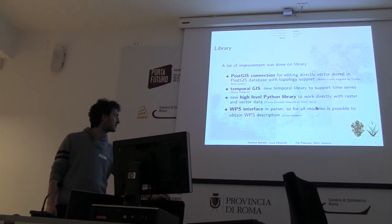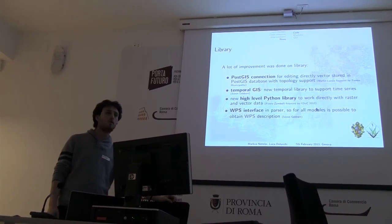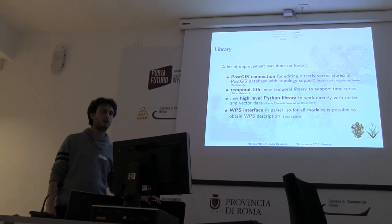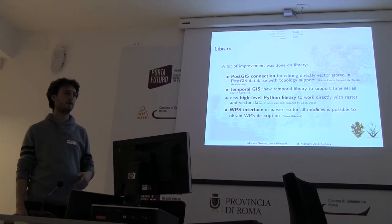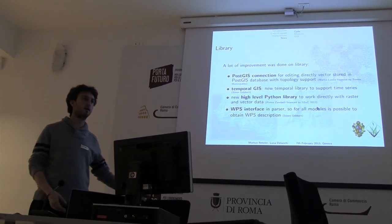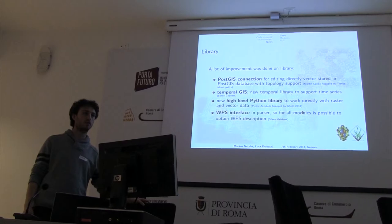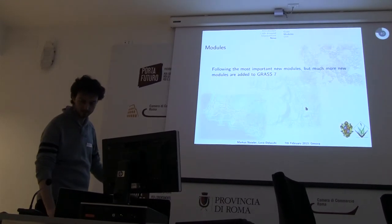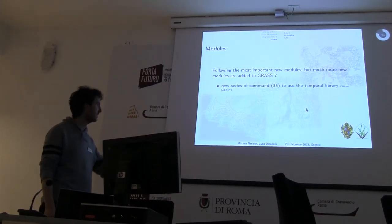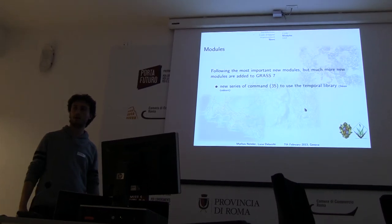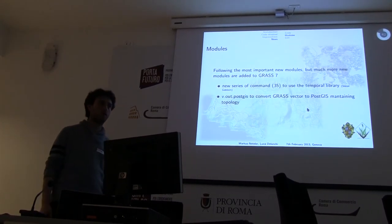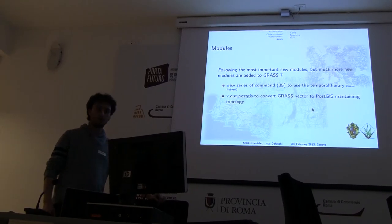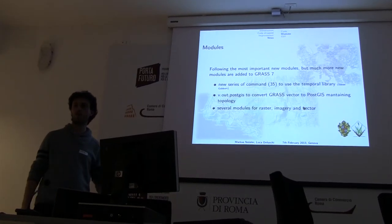The last important new feature is the WPS interface. Now you can call each module inside GRASS and return a WPS standard description. You can use it, for example, in PyWPS or the Zoo project to create web processes using GRASS. There are also two output options for using the QGIS topology layer, and of course a lot of new modules for raster, vector, and imagery.